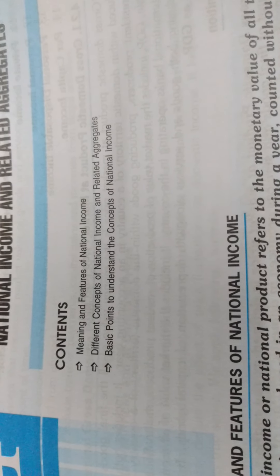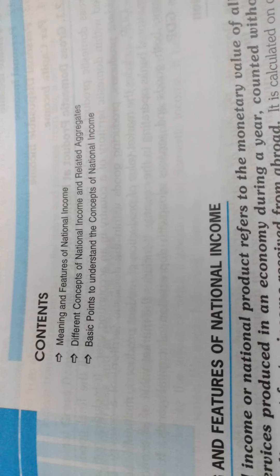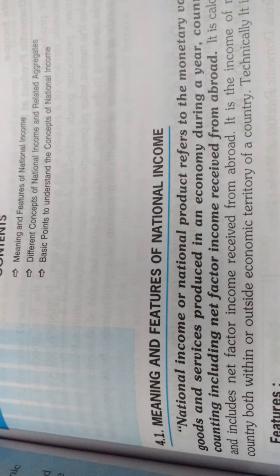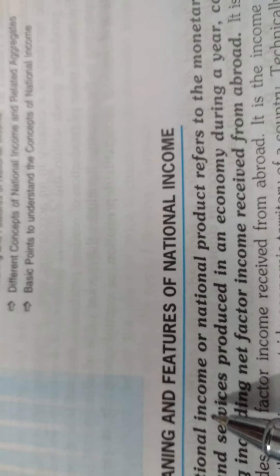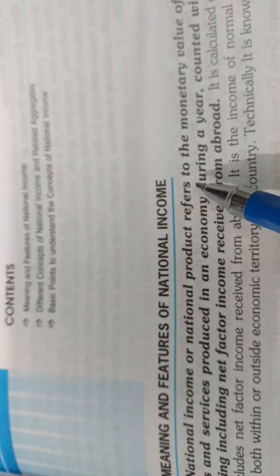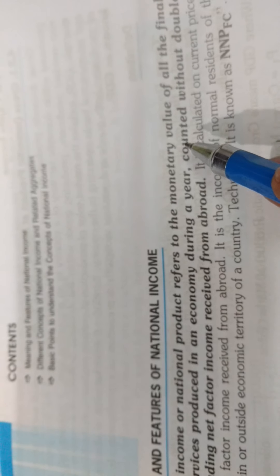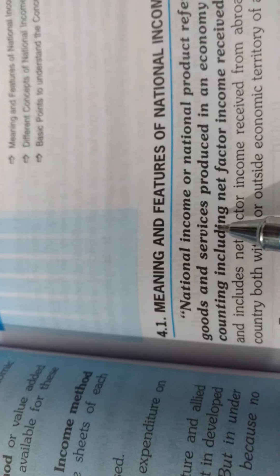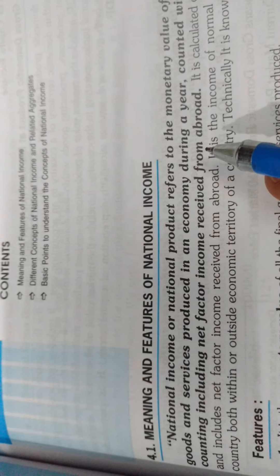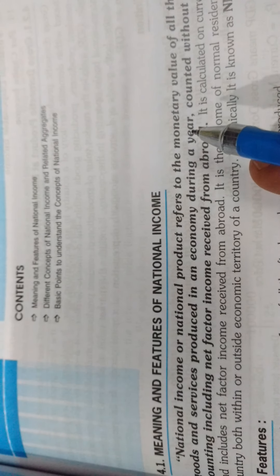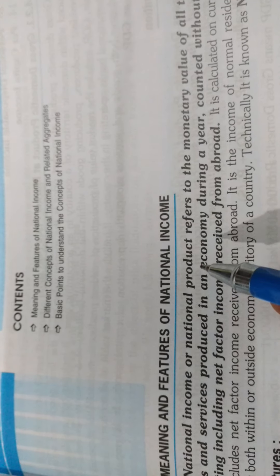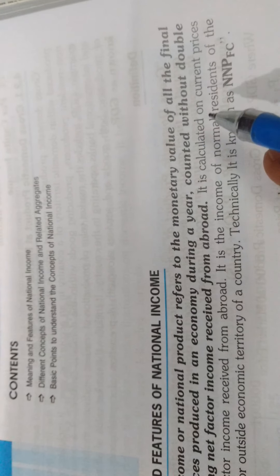First of all, we will discuss what you mean by national income. The national income and national products refer to the monetary value of all the final goods and services produced in an economy during a year, counted without double counting.